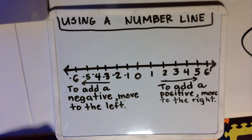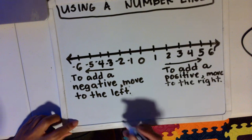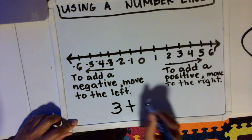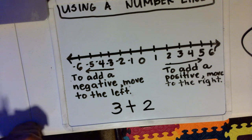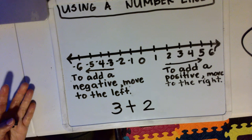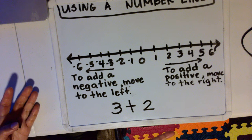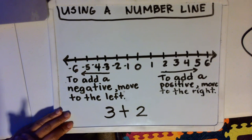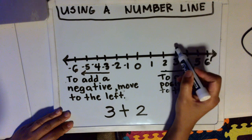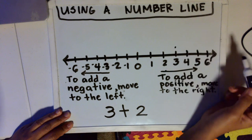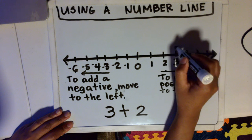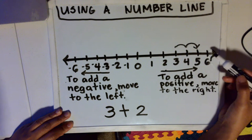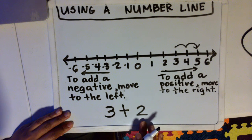So let's go over some examples. Let's say we have two positive numbers: three plus two. We know that three plus two is equal to five from elementary school, but what would that look like on the number line? It simply means that from three, we're going to add two more — one, two — and the movement is going to the right because we're adding a positive two.